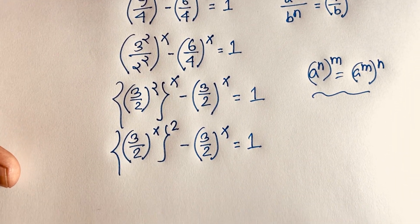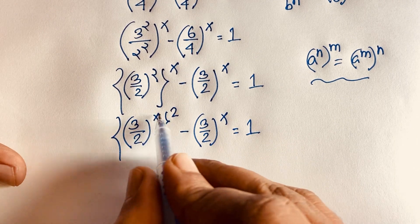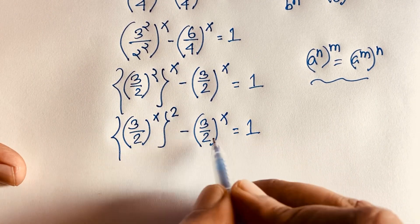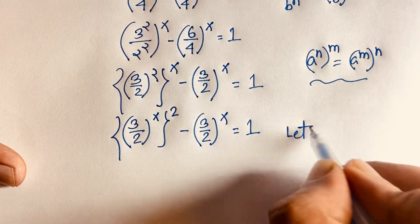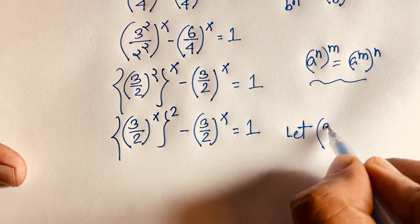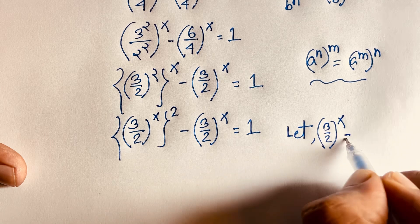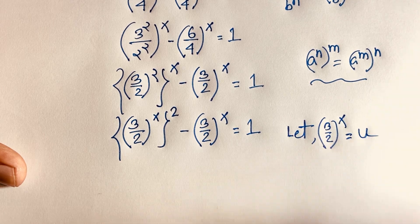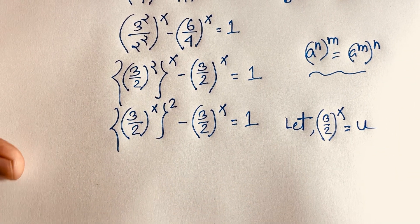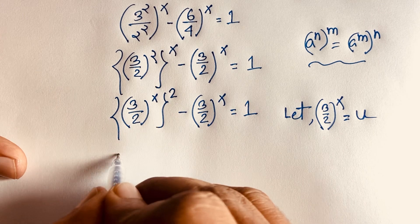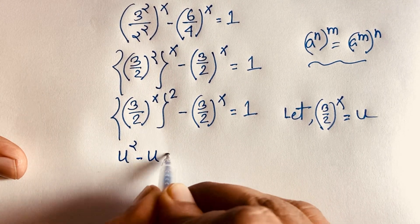At this moment, (3/2)^x is common in both terms. So let u equal (3/2)^x. Substituting, the equation becomes u squared minus u is equal to 1.